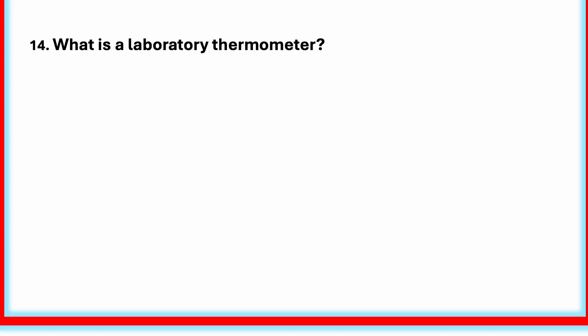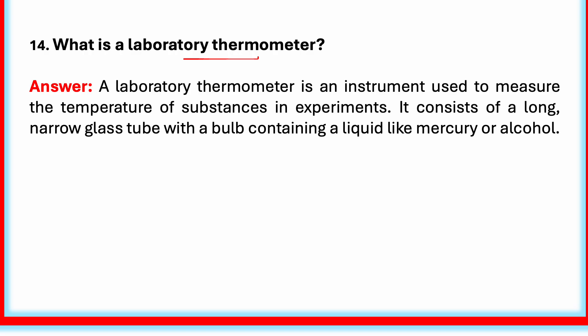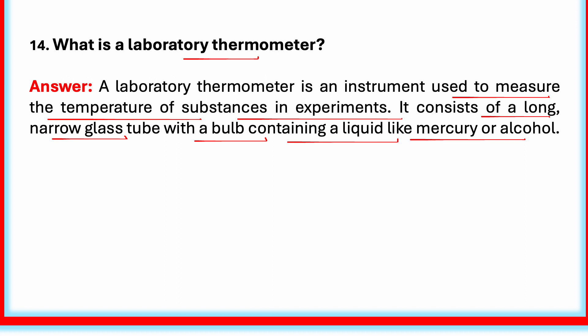What is a laboratory thermometer? A laboratory thermometer is an instrument used to measure the temperature of substances in experiments. It consists of a long, narrow glass tube with a bulb containing a liquid like mercury or alcohol. It helps measure the temperature of liquids, solids or gases — not the human body. It has a long thin glass tube sealed at both ends. At the bottom there is a small bulb containing mercury or coloured alcohol. Inside, you can see a thin line of liquid moving up or down.